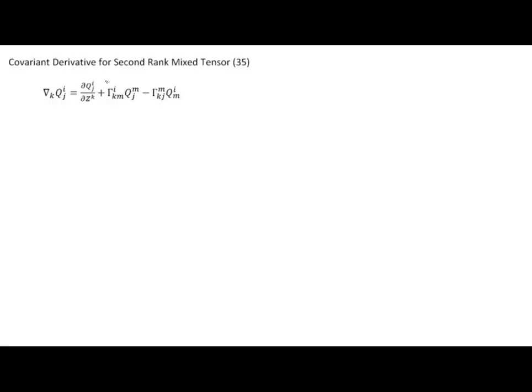So by way of a recap, the first thing we did was derive this expression as the covariant derivative of a second rank mixed tensor. It's simply the partial derivative of the tensor, followed by two terms, one in which we contract the i index in this direction, and one where we contract the j index in this direction.